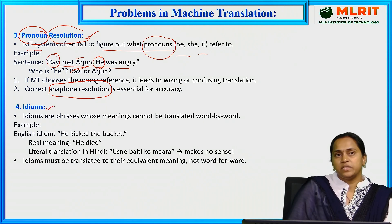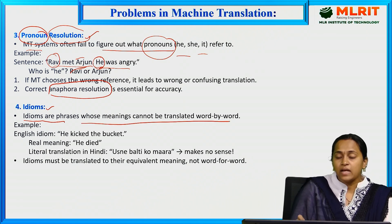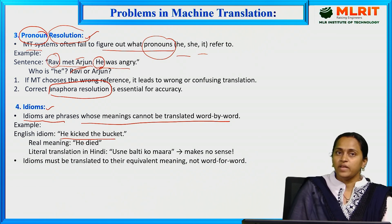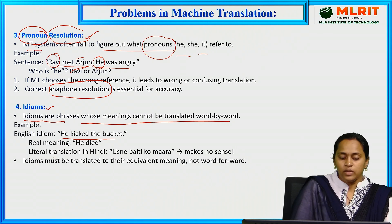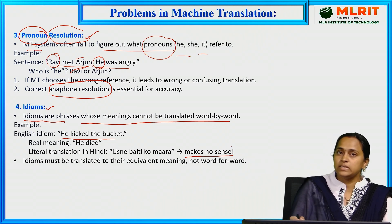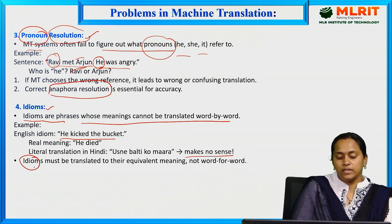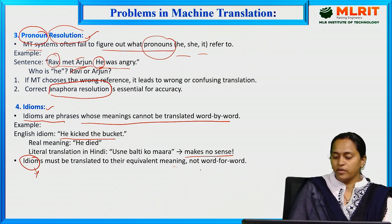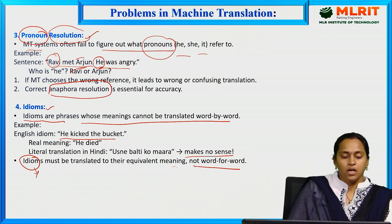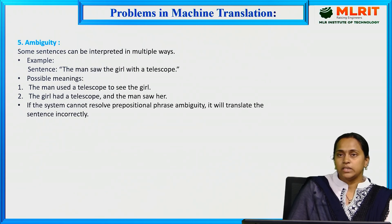The fourth problem is idioms, a very important drawback in machine translation. Idioms are phrases whose meanings cannot be translated word by word. For example, 'he kicked the bucket' — the literal Hindi translation 'usne baalti ko maara' makes no sense. Idioms must be translated to their equivalent meaning, not word for word. Word order, word sense, pronoun resolution, and idioms are all very important problems in machine translation.